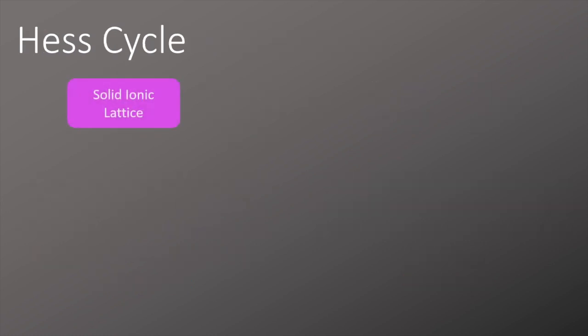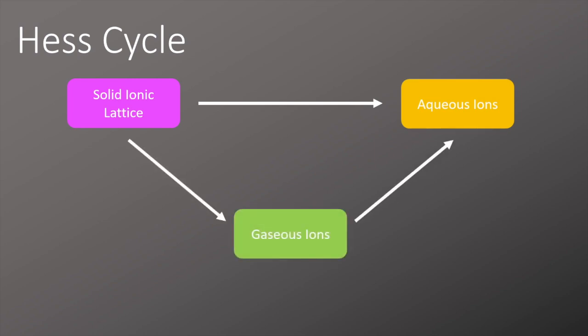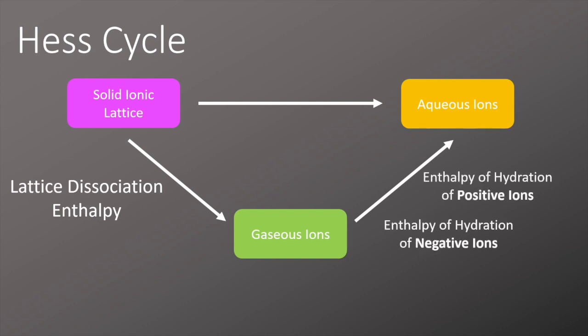We can turn that process into a Hess cycle. We start with a solid ionic lattice and go across to making aqueous ions, then draw the alternative route via the gaseous ions along the bottom. We label each section: the first is the lattice dissociation enthalpy, which gives us the gaseous ions, and in the second step we have the enthalpy of hydration of positive ions and the enthalpy of hydration of negative ions.